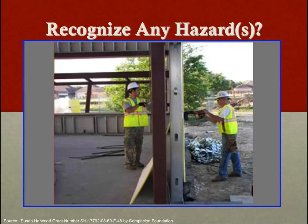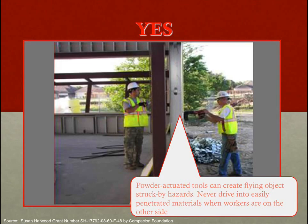Here's another favorite — the wrecking ball is number one, and this is number two. We have two employees working in close proximity on opposite sides of a wall using power-actuated nail guns. Obviously there is great potential for one employee to injure the other. OSHA's comment: power-actuated tools can create flying object struck by hazards; never drive into easily penetrated materials when workers are on the other side. Think about how these two employees could work safer — could one of them move or find a different area to work? Yes, they probably could.